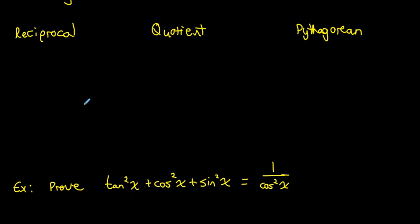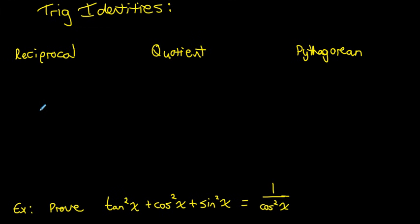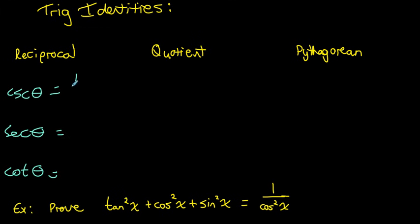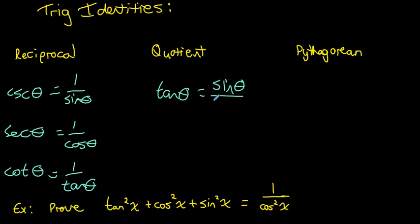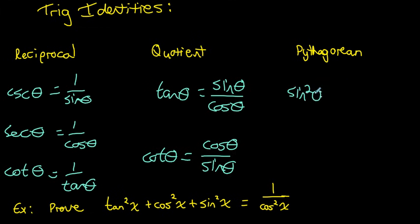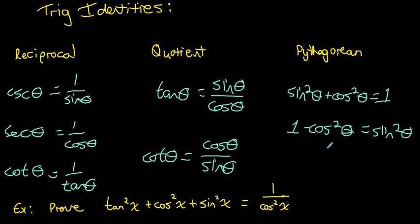Now for trig identities. The primary identities include the reciprocal identities: cosecant is the reciprocal of sine, secant is the reciprocal of cosine, and cotangent is the reciprocal of tan. The quotient identity states tan θ = sin θ / cos θ, and cotangent = cos θ / sin θ. The Pythagorean identity is sin²θ + cos²θ = 1, which can be rearranged to isolate either sin²θ = 1 − cos²θ or cos²θ = 1 − sin²θ.